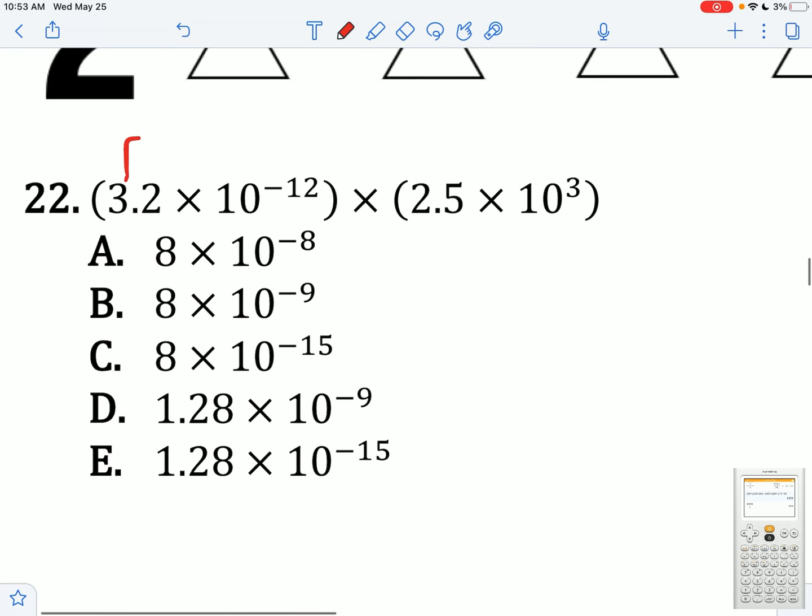In order to do scientific notation, you first multiply these two values here. You're going to get 8. And you're going to do 10 to the 3 plus negative 12, which is 8 times 10 to the negative 9.